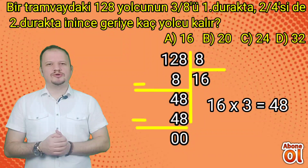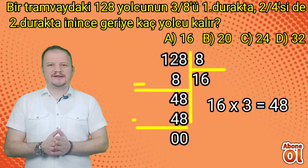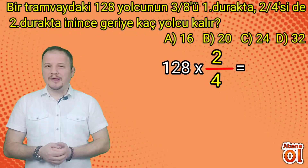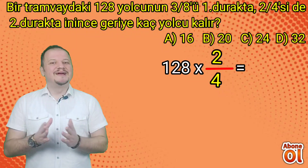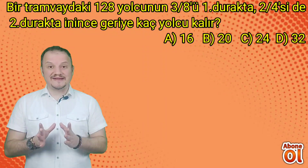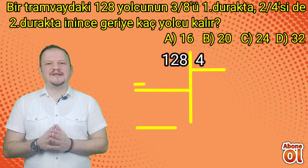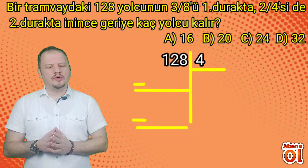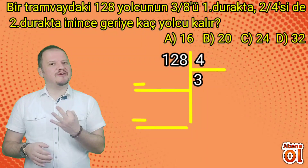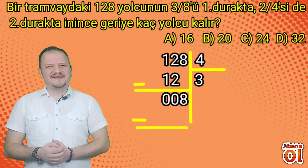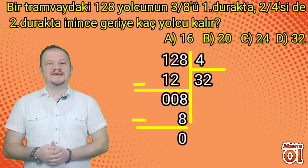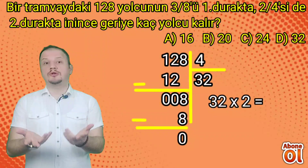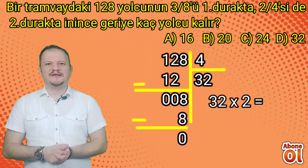2. durakta 4'te 2'sinin indiğini problemden anlıyoruz. Geriye kalan değil, yine 128 üzerinden hesaplıyoruz. 128'i 4'e bölersek: 12'de 4 üç defa var, 3×4=12; 8'i indirince 8'de 4 iki defa, 2×4=8; bölüm 32 bulunur. 32 ile 2'yi çarpıyoruz; 2×2=4, 2×3=6; 2. durakta 64 yolcu iner.